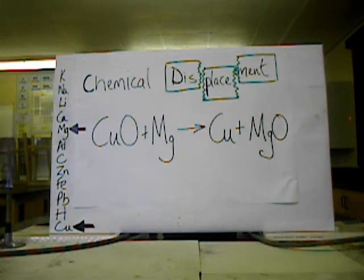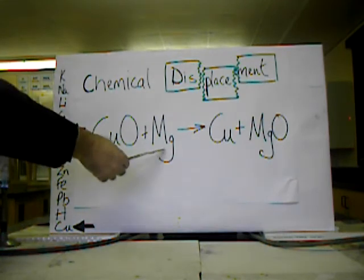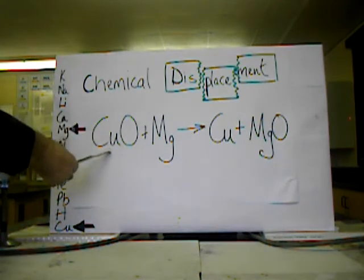Let's take a look at an example of a displacement reaction. This is quite a spectacular displacement reaction. Here we have a reaction between magnesium metal and copper oxide.